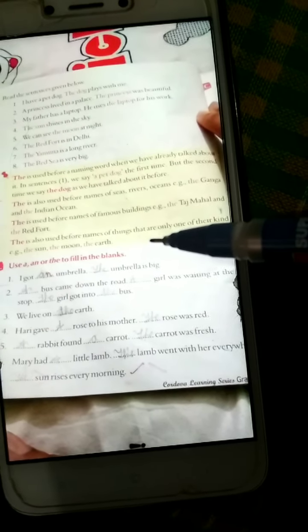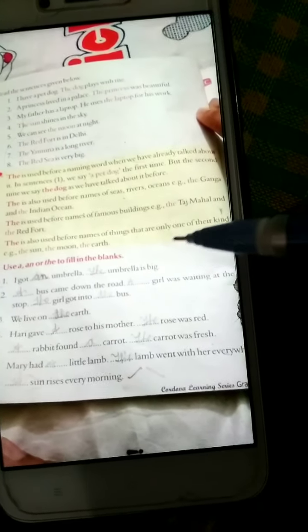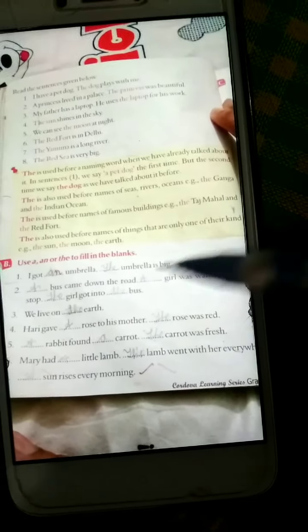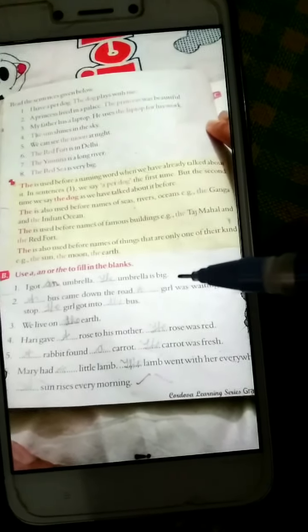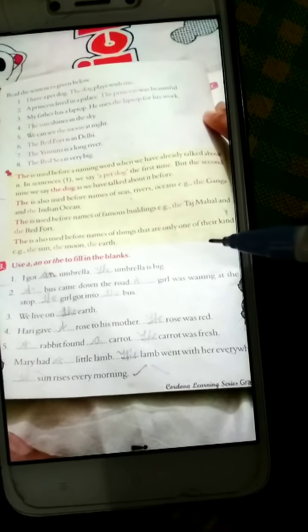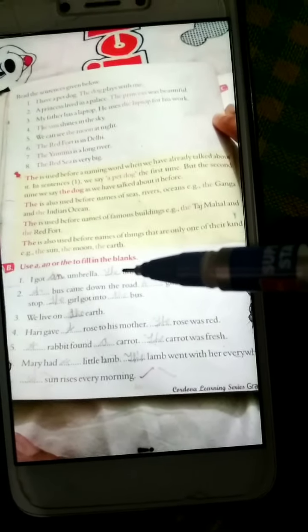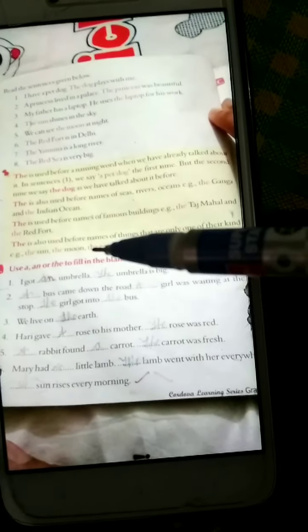'The' is used before names of famous buildings like Taj Mahal, Red Fort. We will write the Taj Mahal, we will write the Red Fort. And next, 'the' is used before names of things that are only one of their kind, like sun. It's only one in the world, so we will write here the moon, the earth, the sun.